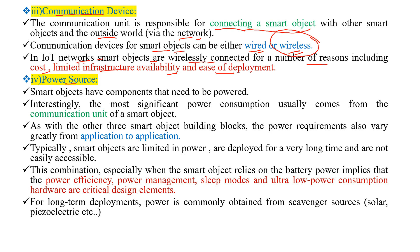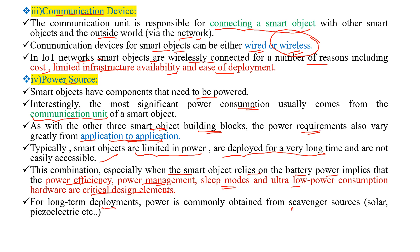The fourth characteristic is the power source. Smart objects have components that need to be powered, and the most significant power consumption usually comes from the communication unit. Power requirements vary greatly from application to application. Smart objects are typically limited in power, deployed for very long times, and not easily accessible. When relying on battery power, important design elements include power efficiency, power management, sleep modes, and ultra-low power consumption hardware. For long-term deployments, power can be obtained from scavenger sources like solar or piezoelectric.